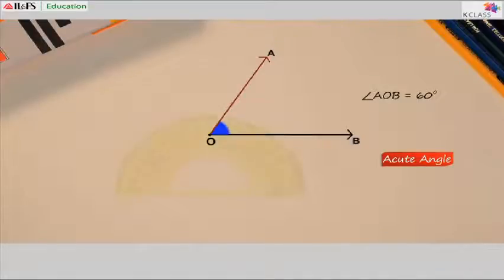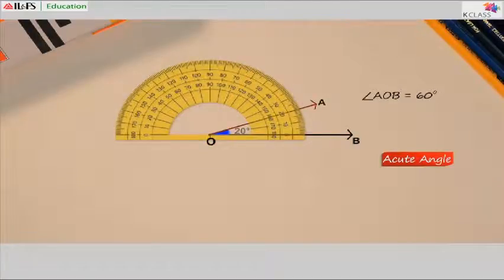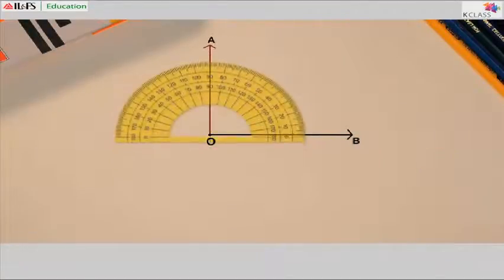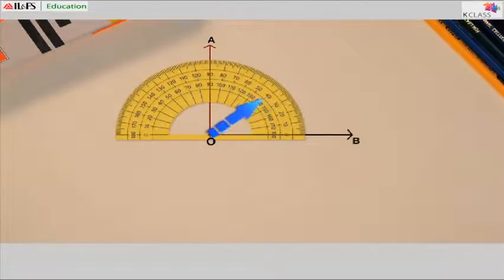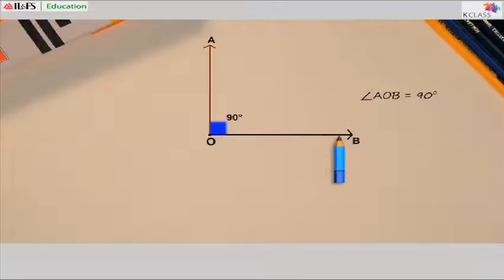And so are these. Now let's check out this one. It measures exactly 90 degrees. An angle measuring 90 degrees is a right angle. Angle AOB is equal to 90 degrees — it is a right angle.